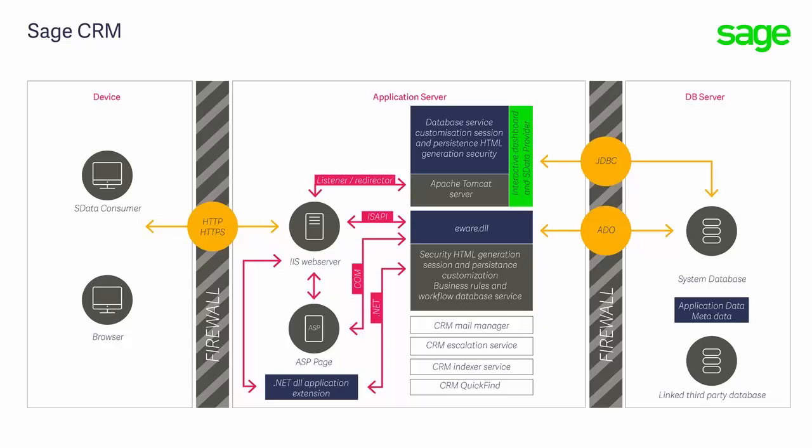The supporting technologies include Apache Tomcat, the Spring Framework, and Hibernate. Apache Tomcat is developed by the Apache Software Foundation and provides an ideal Java HTTP web server environment in which Java code can run. It is a simple, robust web server and allows web applications written in Java to extend the features of Sage CRM. If you're a system administrator, you're likely to become aware of Tomcat as it is mentioned in system messages.